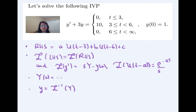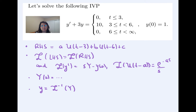In this video we're going to solve a first order initial value problem by using the Laplace transform. We'll go over a number of things: first, since the right hand side of the ODE is a function defined by cases, we'll rewrite it in terms of unit step functions. Then we'll apply the Laplace transform on both sides, use properties of the transform — including the Laplace transform of derivatives and of unit step functions — solve for the Laplace transform of the solution, and finally compute the inverse transform to find the solution.